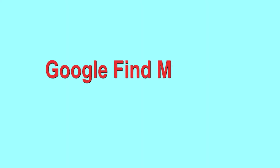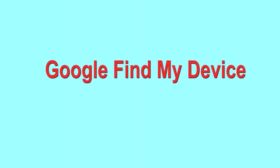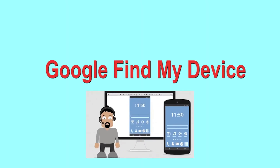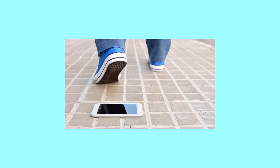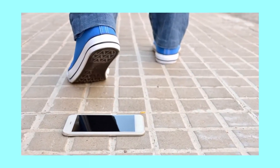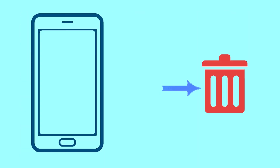Hard reset with Google Find My Device. This is the best method to reset your Android phone remotely. This method is useful when you lose your phone or are not able to access your mobile. This method also deletes all your Android phone data.